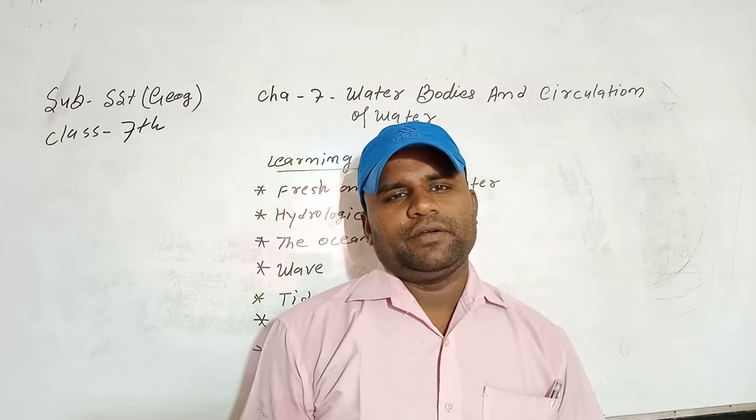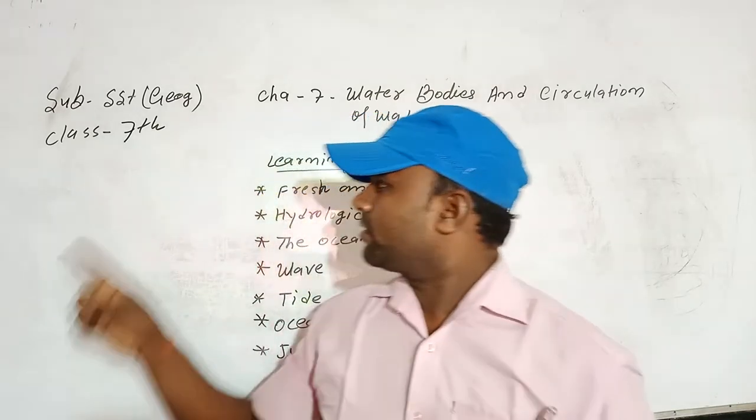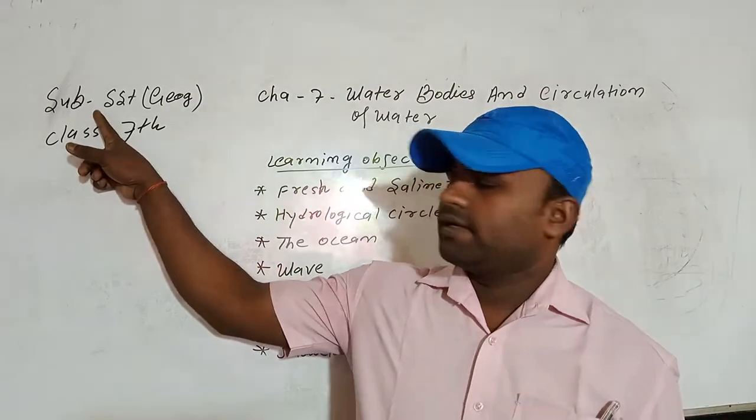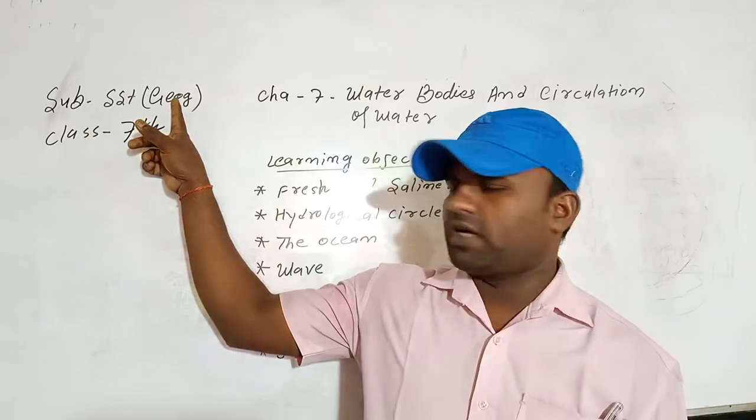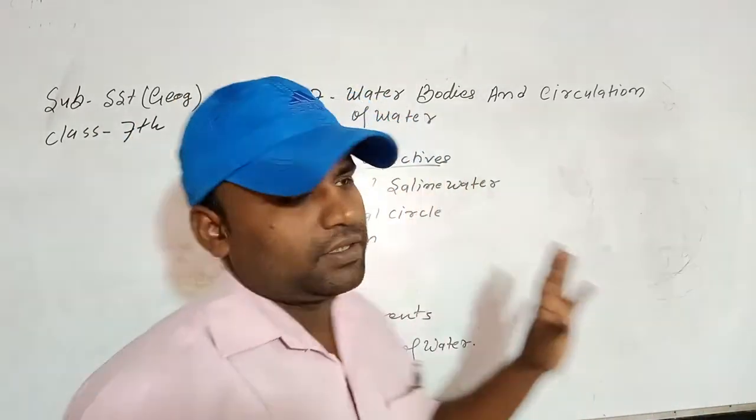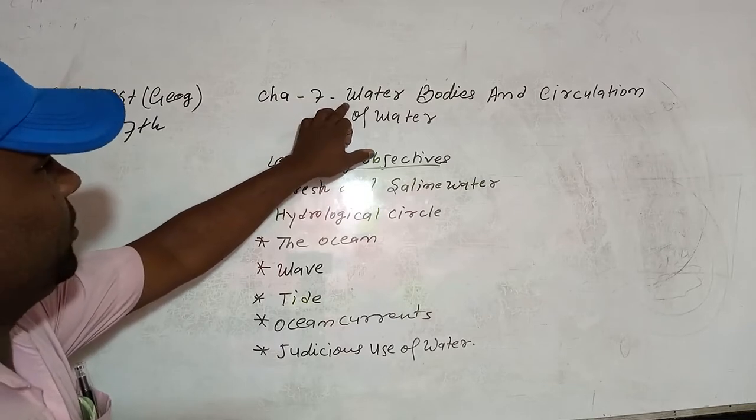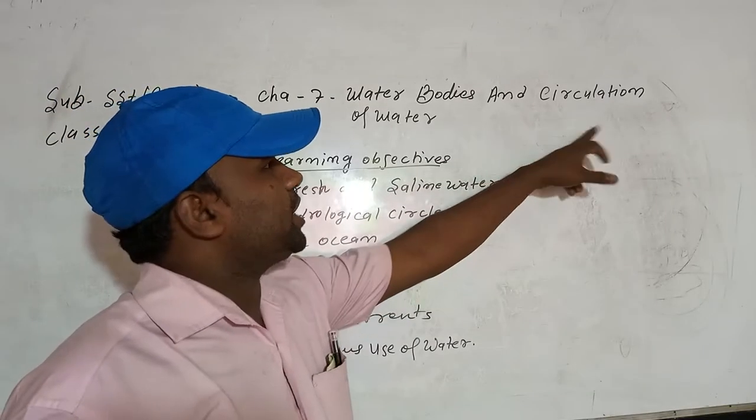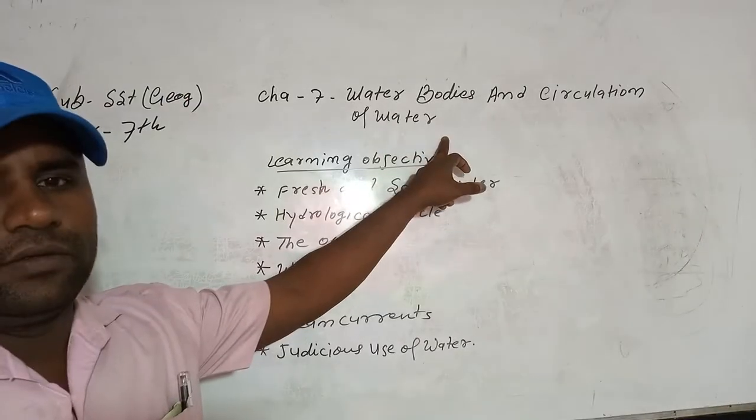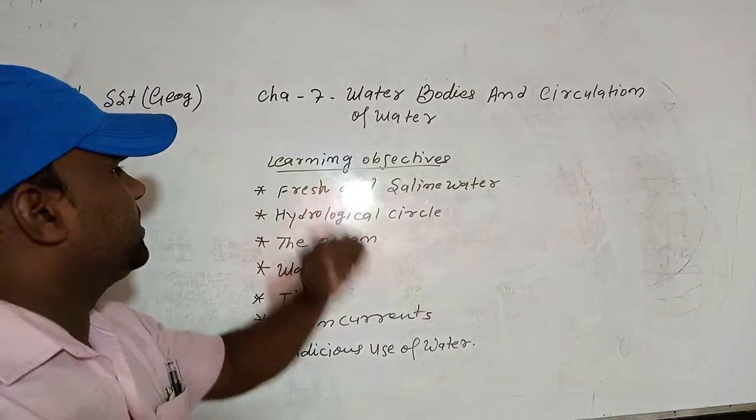today I will cover class 7th subject, social studies. The part of this subject is geography and the topic from your book is water bodies and circulation of water. According to your book, chapter number 7.